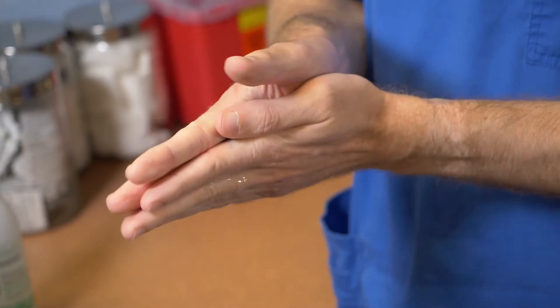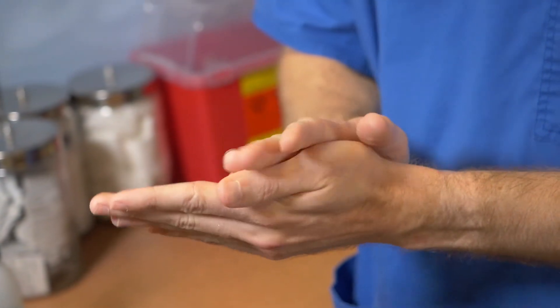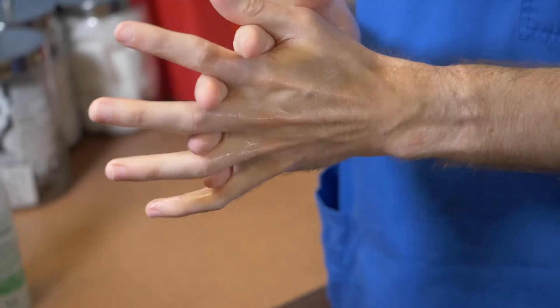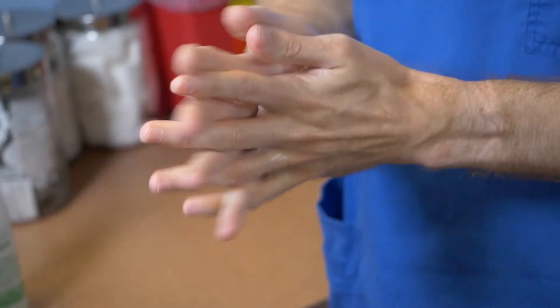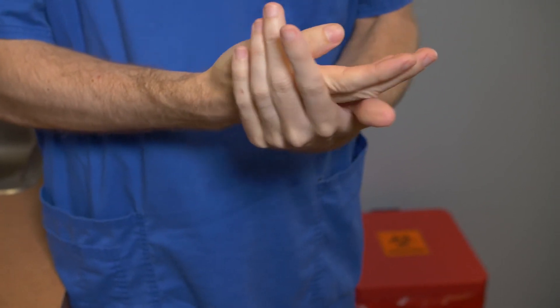Apply it by rubbing your palms together, the right palm over the dorsal aspect of the left hand, and vice versa. Then you will rub your palm to palm with your fingers interlaced and then the backs of your fingers, or opposing palms with fingers interlocked.